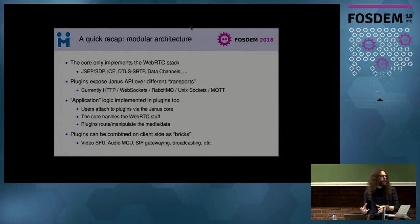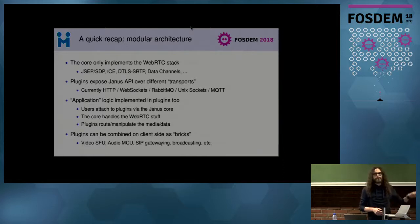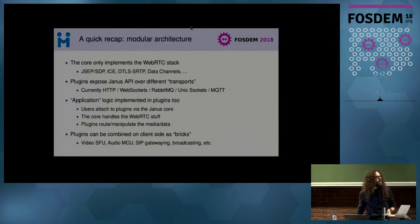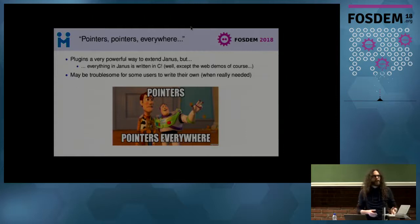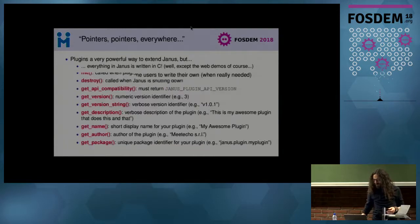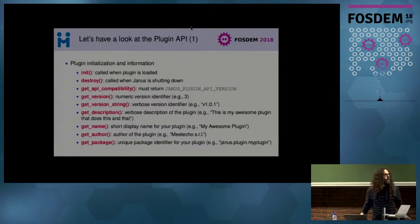If there's a new need not covered by existing plugins, you just write a new plugin to handle media and add it to Janus. The only caveat is that Janus is written in C, so if you want to write a new plugin you typically have to write it in C as well, which may or may not be an issue.